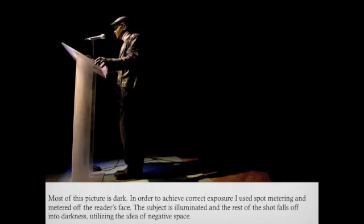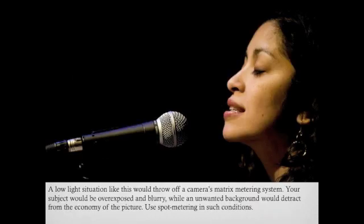In this picture, I focused on the subject using spot metering and was able to capture him and let the rest of the picture fall away into blackness, which is exactly what the scene looked like. If I had used matrix metering in this case, it would have tried to expose in those shadows and the subject would have been overexposed. Same scene, different performer — again I used spot metering to only expose for her face.